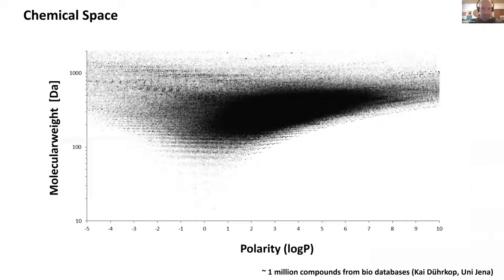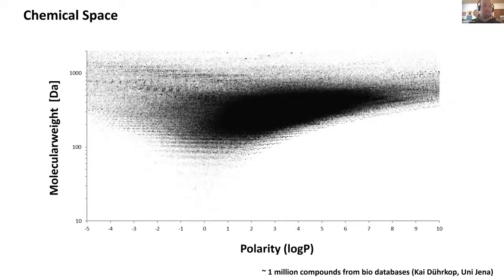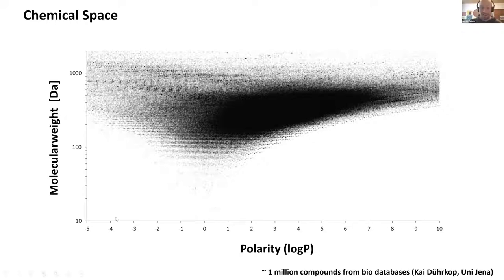Christoph raises a question: what about compounds that are very difficult to ionize? That's a very good question. Depending on the technology we use, this can indeed be difficult. Electrospray ionization will not work for every molecule, and this has important implications when we think about chemical space. Here is a nice example: I took one million different molecules from different biodatabases and plotted simply their molecular weight versus the calculated log P — a measure of polarity — showing how diverse molecules can be in terms of both mass and polarity.